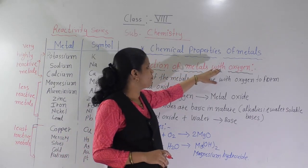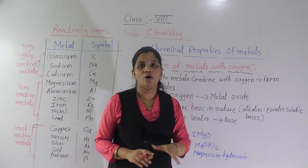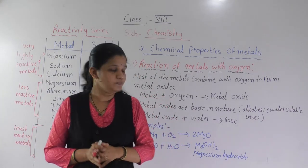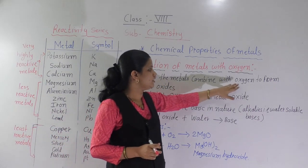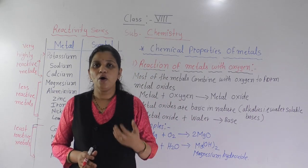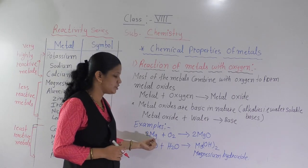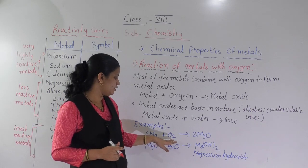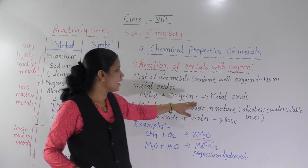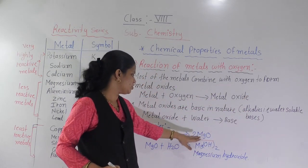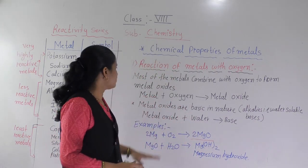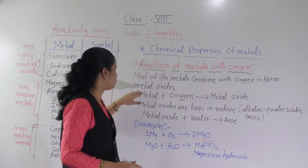In chemical properties of metals, first we will see the reaction of metals with oxygen. What happens when metals come in contact with oxygen? Most of the metals combine with oxygen to form metal oxide. Whenever metals react with oxygen, they form metal oxide. For example, magnesium reacts with oxygen to form magnesium oxide (2MgO). Whenever sodium (Na) reacts with oxygen, it forms sodium oxide. So most of the metals combine with oxygen to form metal oxides.